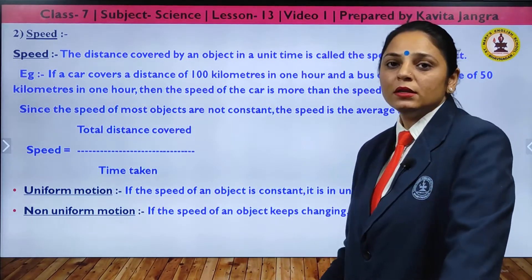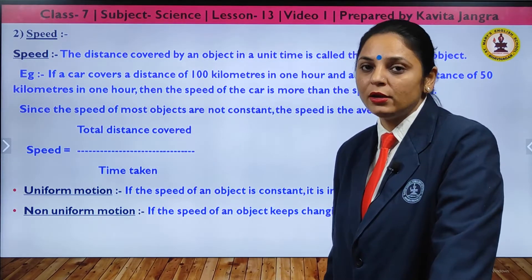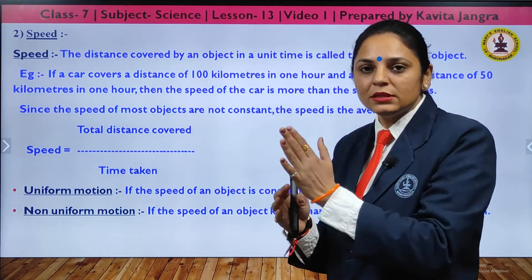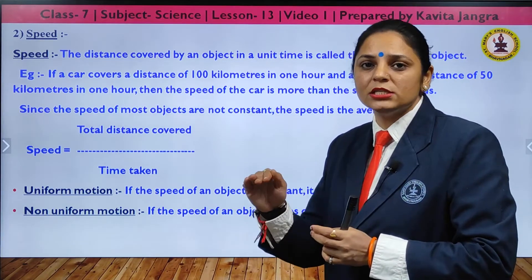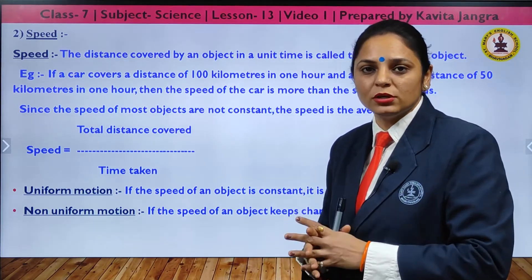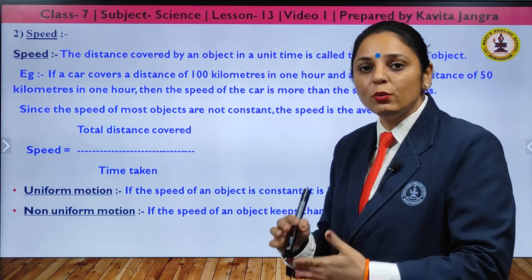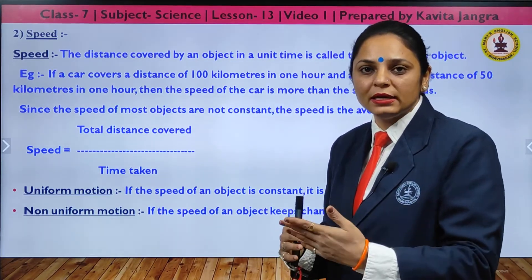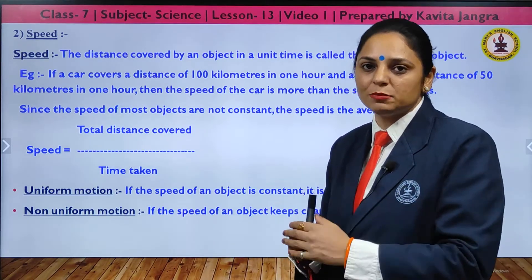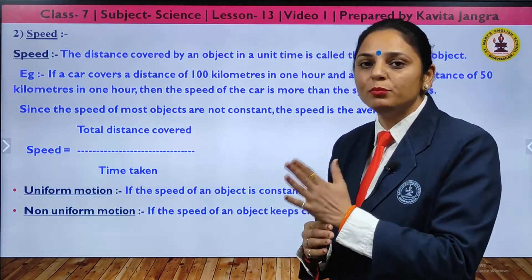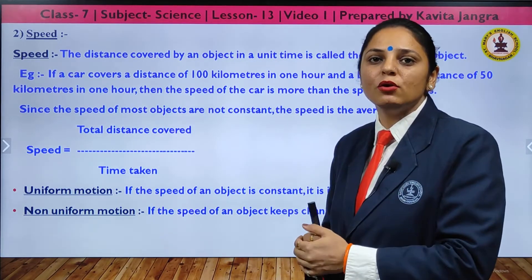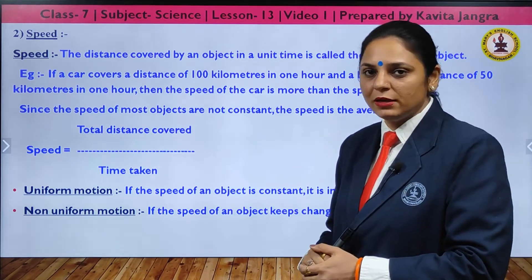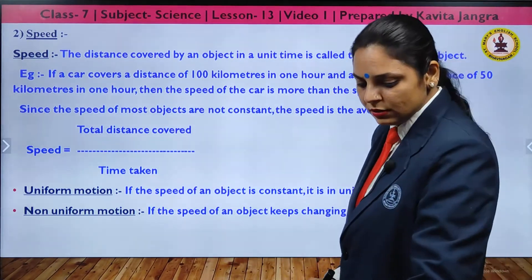There are two types of motion: uniform and non-uniform. In uniform motion, an object covers equal distance in equal intervals of time — both time and distance are constant. In non-uniform motion, the speed varies. For example, when you start a vehicle, it begins at zero speed, then accelerates, and if you apply brakes, the speed decreases. This is non-uniform motion because it does not move at constant speed.